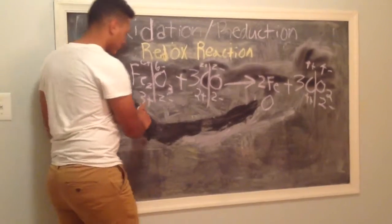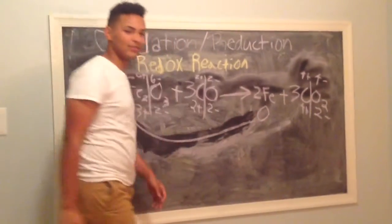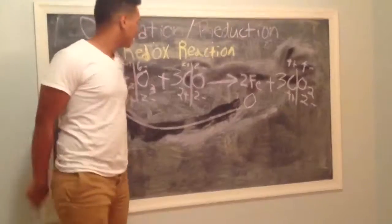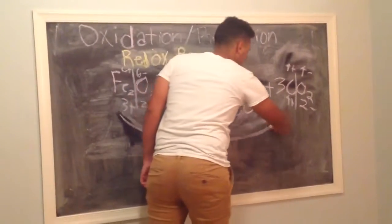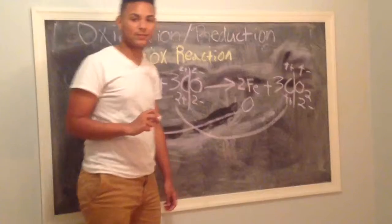Now, iron goes from 3 plus to 0. So that's going to be reduced. For the carbon, it goes from 2 plus all the way to 4 plus. So that one is being oxidized.